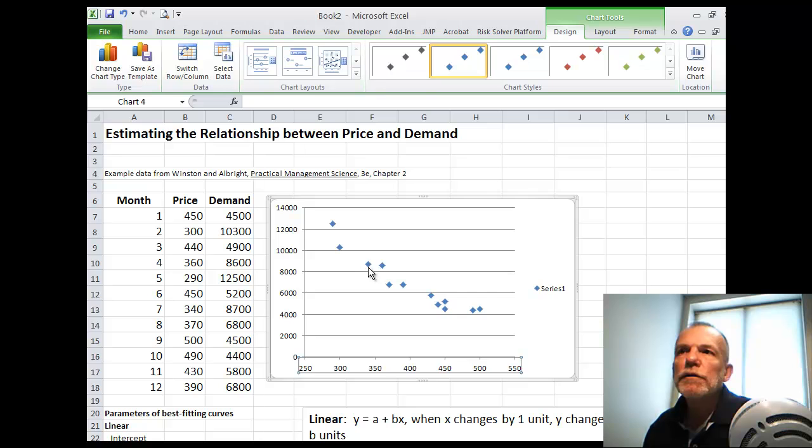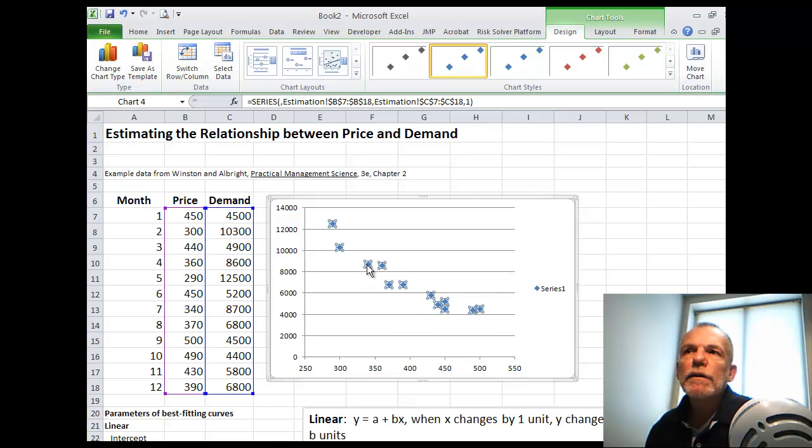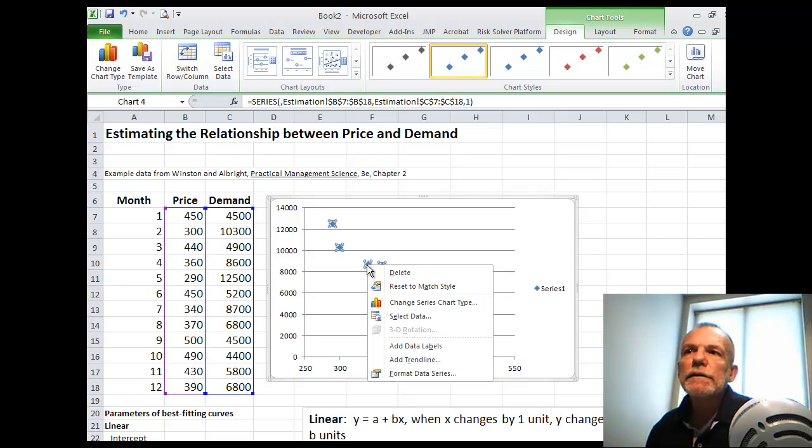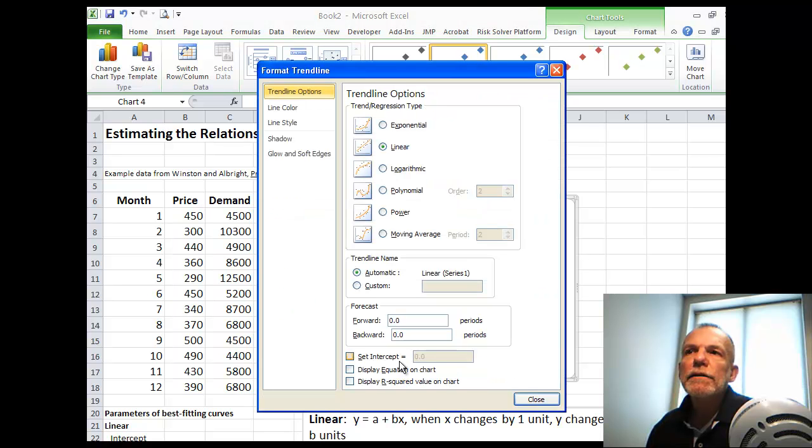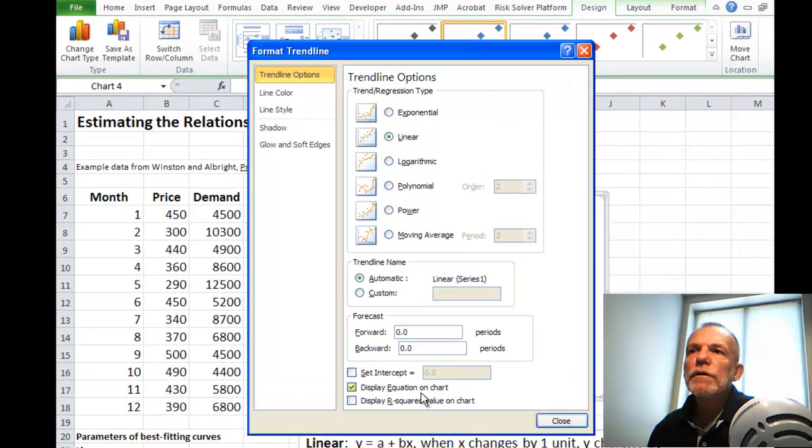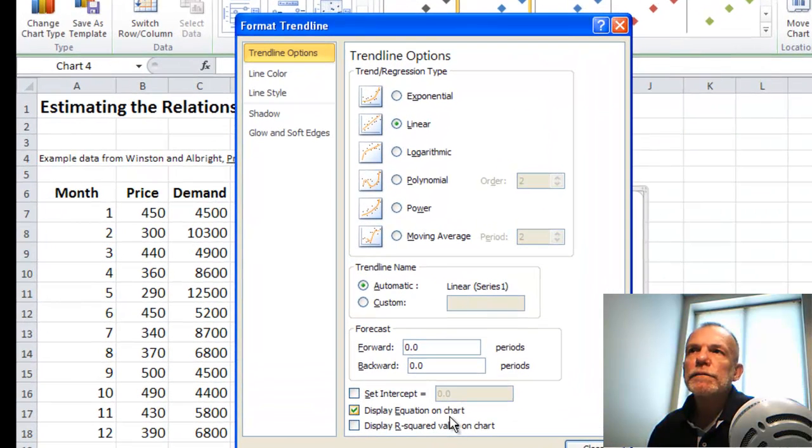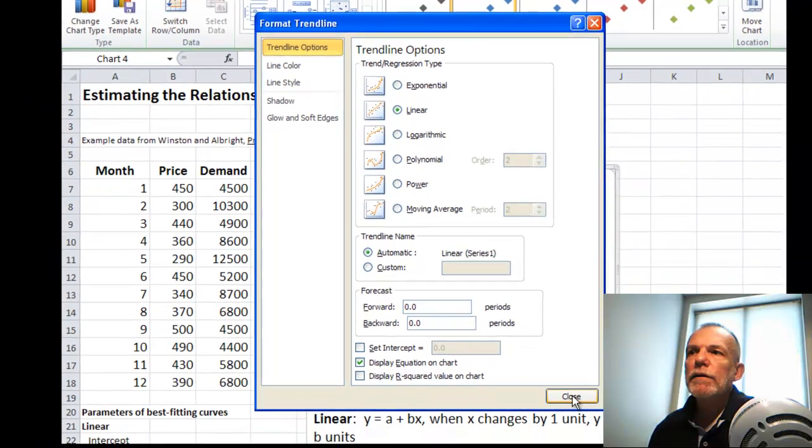Now to use the trendline feature, we just select the data, right mouse, and add trendline. Now we're going to do three of these. So we'll just go through one at a time and record the results and then do the second and the third one. We're going to start with a linear trendline. A little picture gives us an idea of the shape of that type of model. And we want to display the equation on the chart. And then we just close.